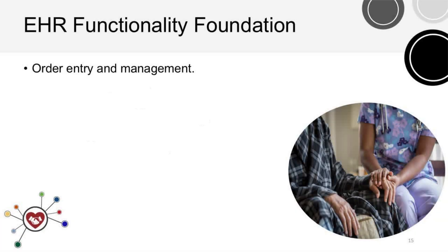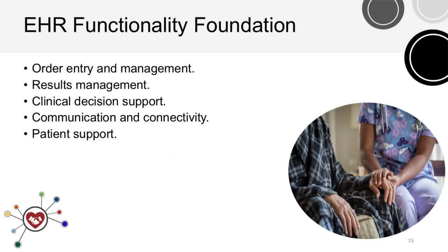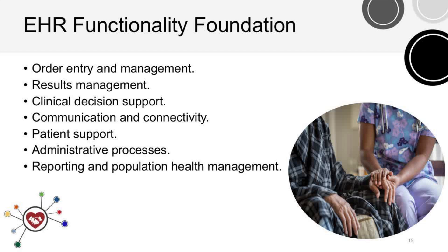Electronic health records have several layers and options for functionality. There are eight core functionality foundations found in each system. These elements create the foundation to support quality initiatives and overall sustainability of workflows for accuracy and efficiency. Throughout this microlearning series, we will talk about ways to utilize these elements to leverage these technology components to advance care delivery effectively.